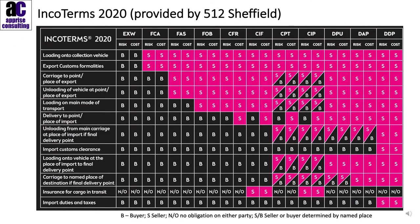This chart produced by 512 Sheffield, a freight forwarding company, is excellent in that it tells us who is responsible for what in terms of an international commercial movement. Along the left-hand side we see all the potential costs involved. Across the top we have all of the different Incoterms, and underneath we have who's responsible for risk and cost. B for buyer, S for seller, N/O where there's no obligation on either party, and S/B where seller or buyer is determined by the named place.